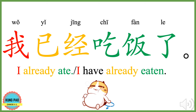了. 我已经吃饭了. 我 means 'I' or 'me.' 已经 means 'already.' 吃饭 means 'to eat.' 了 here is a completed action marker. 我已经吃饭了 means 'I already ate,' or 'I have already eaten.'